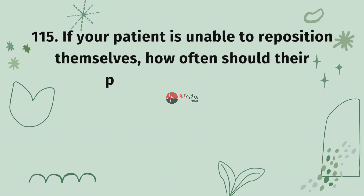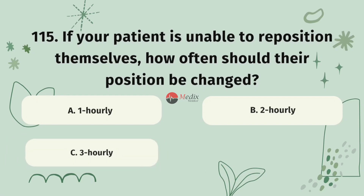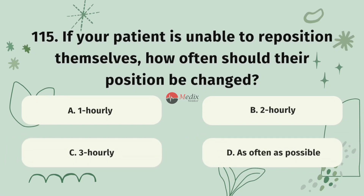Question 115. If your patient is unable to reposition themselves, how often should their position be changed? Option A, one hourly. Option B, two hourly. Option C, three hourly. Option D, as often as possible. The correct answer is B.